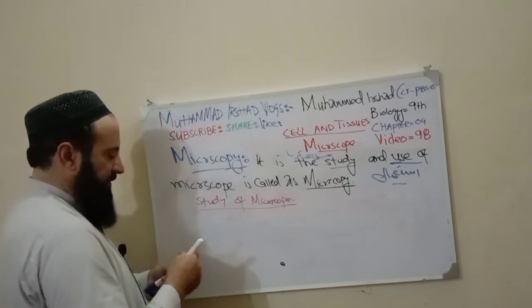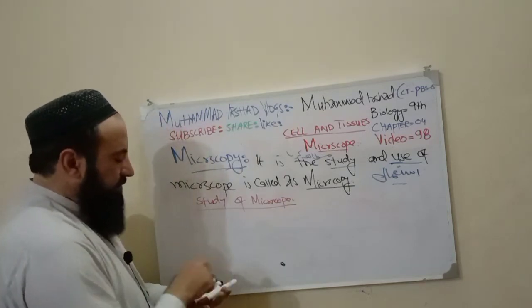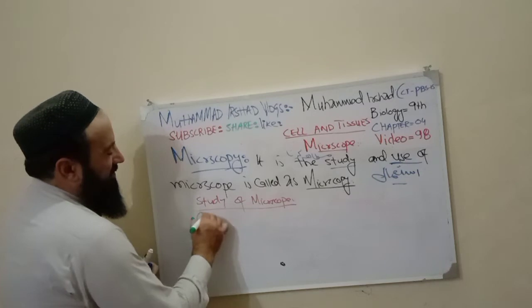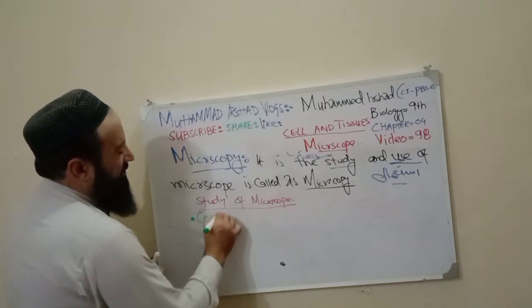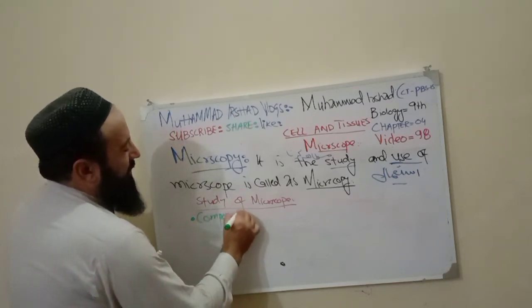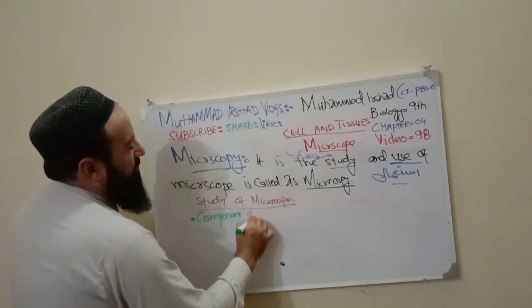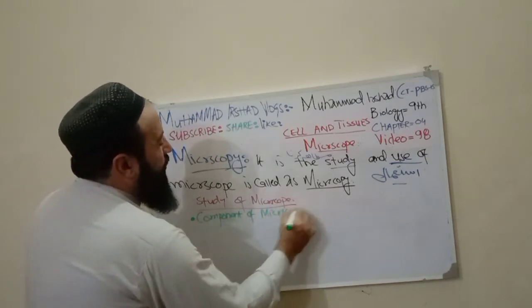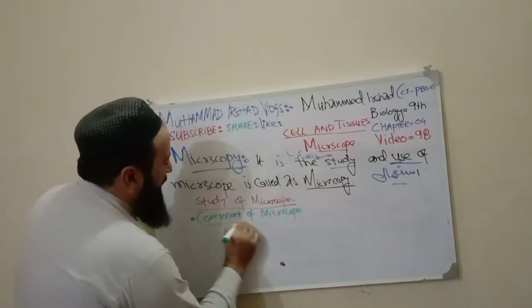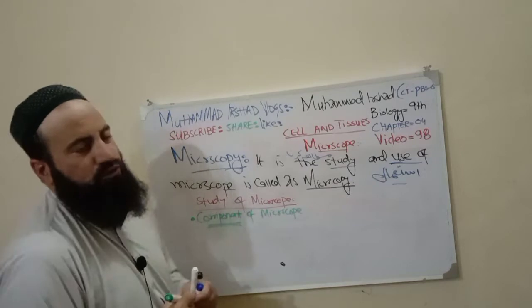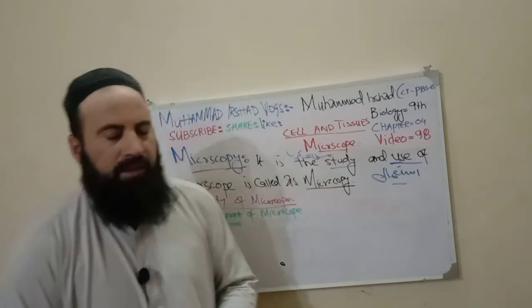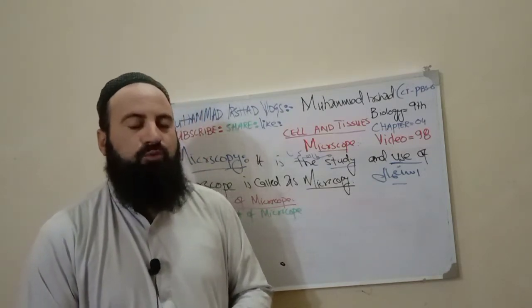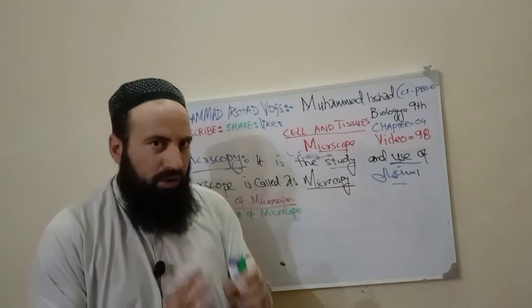Now we look at the components of the Microscope. The Microscope has 12 to 15 components, which we will study one by one.